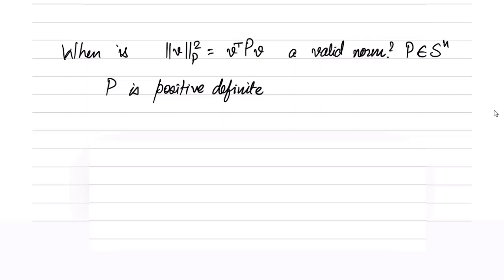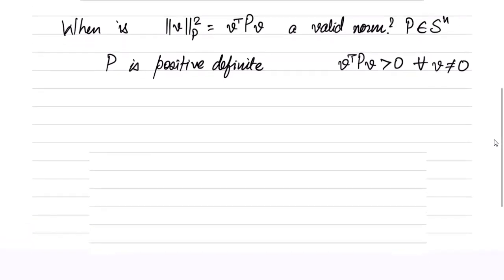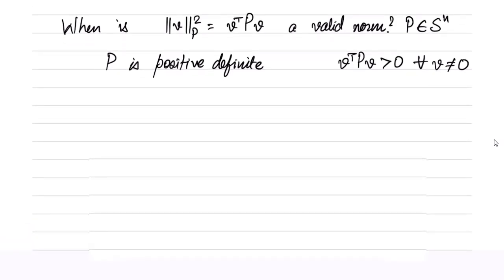From the definition, to ensure positivity, v^T P v must be greater than zero for all v, provided v is not equal to zero. So as long as v is not zero, this must be strictly positive — this satisfies at least the non-negativity and definiteness properties. This is the definition of positive definiteness, and in this case the v_P norm is a valid norm.